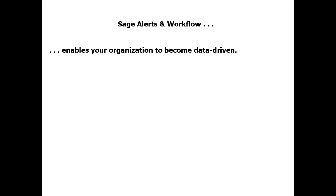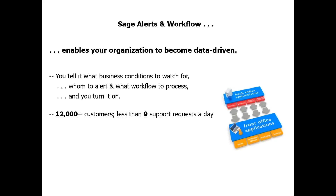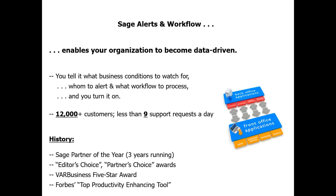The technology from Sage called Alerts and Workflow is what enables your organization to become data-driven. The analogy I like to use is that of a smoke detector for your business data. You tell Alerts and Workflow what business conditions you want it to watch for — overdue invoices, low stock, a change to a customer's credit limit — you tell it what to do when those situations occur, you turn it on and walk away. It operates in a completely automated fashion. There are currently between 12,000 and 13,000 customers worldwide using Alerts and Workflow, and our support staff receives fewer than nine incoming support requests a day. Most customers contact us just once a year to renew their annual maintenance and support.